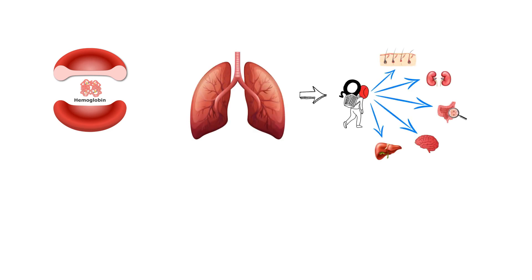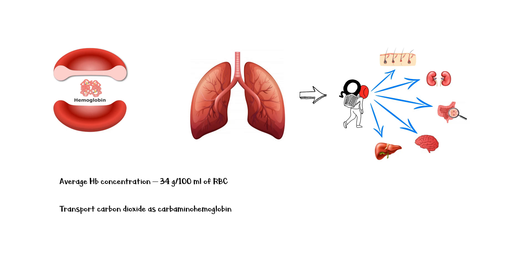The main function of red cells is to transport hemoglobin, which in turn carries oxygen from the lungs to the tissues as oxyhemoglobin. The average hemoglobin concentration in red cells is 34 grams per 100 milliliters of cells. They also transport carbon dioxide from the tissues to the lungs as carbaminohemoglobin, to excrete carbon dioxide from the body in exhaled air.